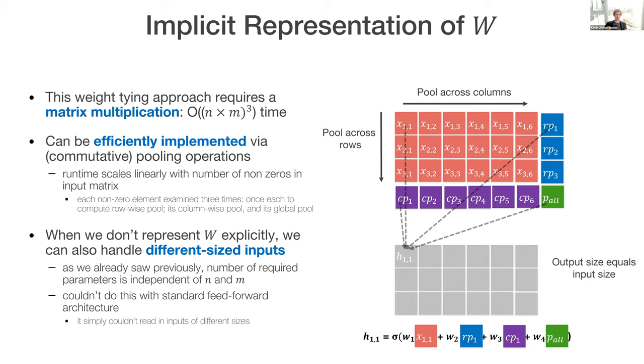Now, this forced us to represent this weight matrix explicitly and then to do a matrix multiplication, which is expensive for the feedforward pass in the network. And thus makes training the network really expensive, but it can be efficiently implemented by making some commutative pooling operations. And this causes the runtime to scale linearly with the number of non-zeros in the input matrix rather than requiring this matrix multiplication. So, we can compute one pool across every row, one pool across every column, and one pool across all elements in the matrix. And notice that when we're not representing w explicitly and we're just speaking about pooling across rows... Oh yeah, please go ahead.